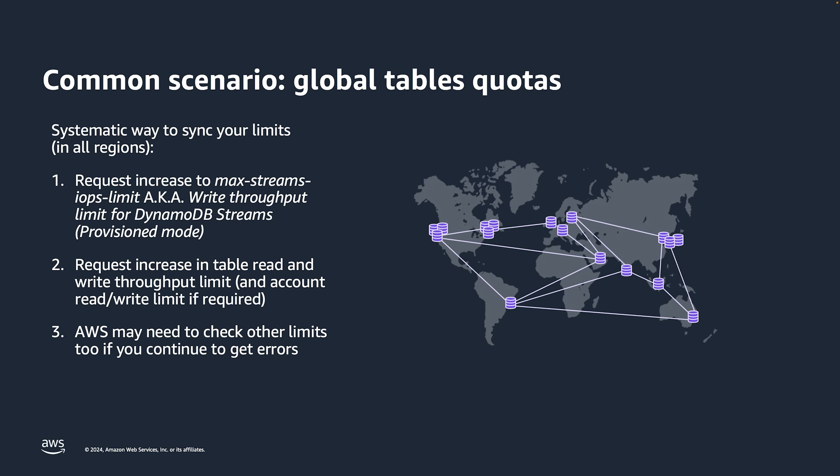Now that you know how to request a limit increase in DynamoDB, let's cover a common scenario. Often customers want to create global tables in new regions, but when customers have non-default limits, they will probably experience an error adding a new region if they're not careful. Table-level write capacity must be the same in each region where the global table will exist. In addition, the max streams IOPS limit — also known as write throughput limit for DynamoDB streams — must be greater than or equal to the table write capacity, and you must set it in each region where the global table will exist. You must request a change to write capacity limits for DynamoDB Streams first, in each region, and only after that limit is increased will you submit a new request to change the table write capacity units if needed. The order of this process is extremely important and you must follow it.